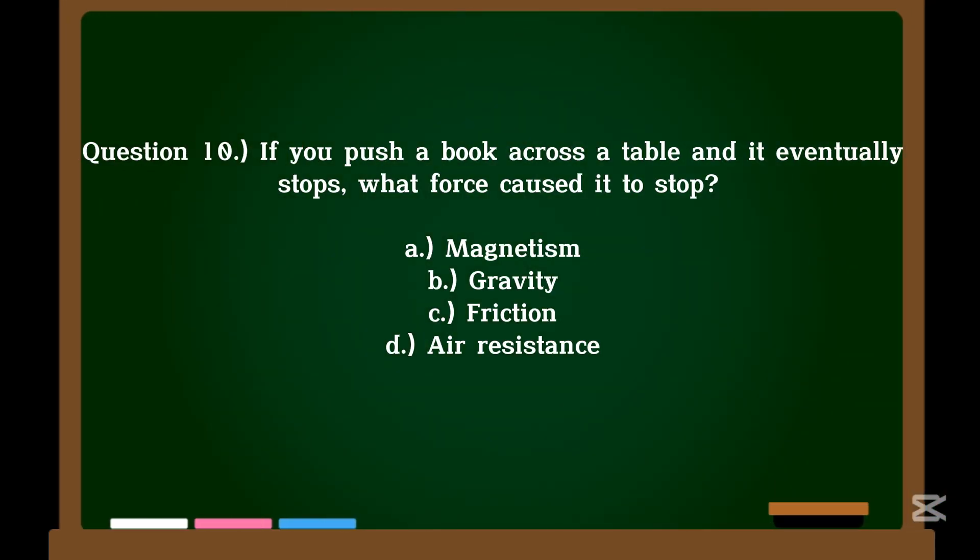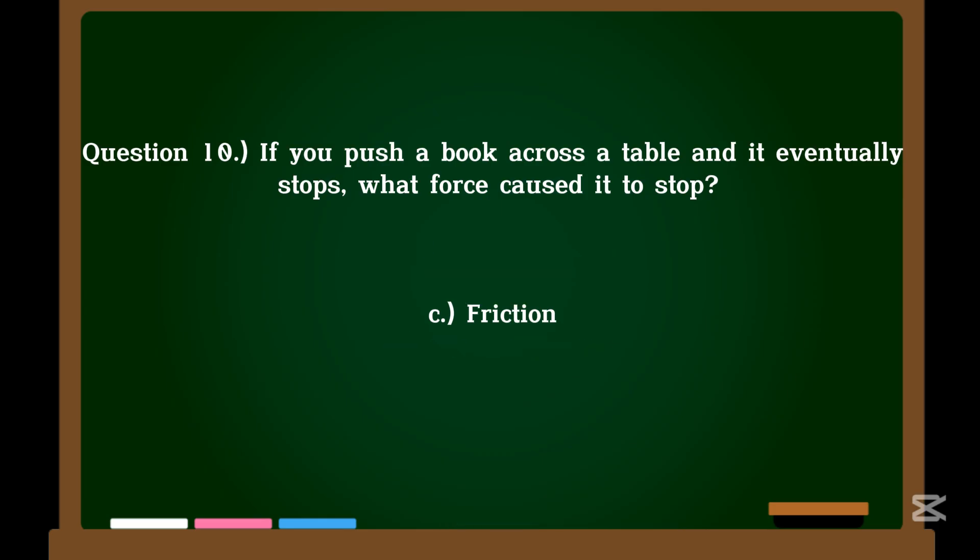Question 10. If you push a book across a table and it eventually stops, what force caused it to stop? A. Magnetism. B. Gravity. C. Friction. D. Air resistance. Correct answer: C. Friction.